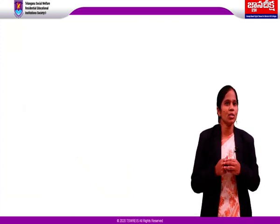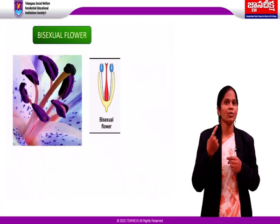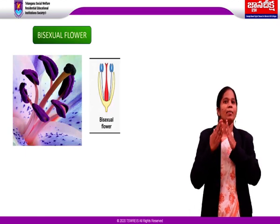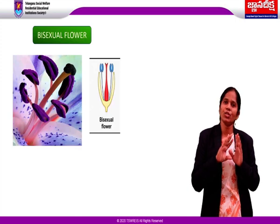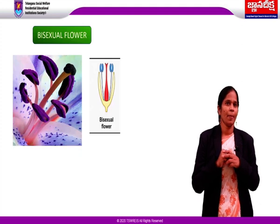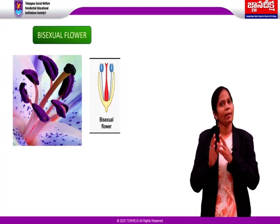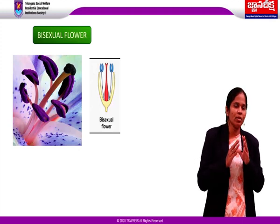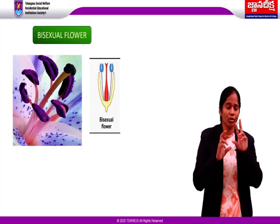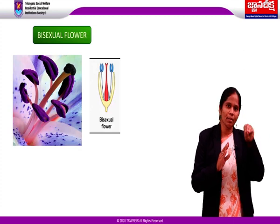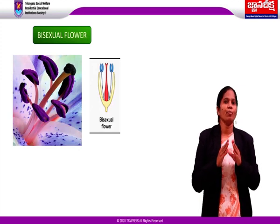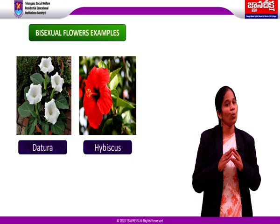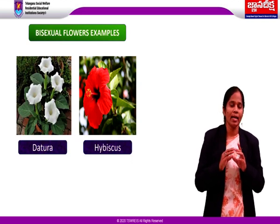The second type of flowers are bisexual flowers. Bisexual means two sexual parts are present in a flower. A flower that contains both male and female reproductive structures is called a bisexual flower. Bisexual flowers are also called complete or perfect flowers because all essential parts are present. Examples: datura, hibiscus, rose, sunflower, mustard, brinjal, and tomato.